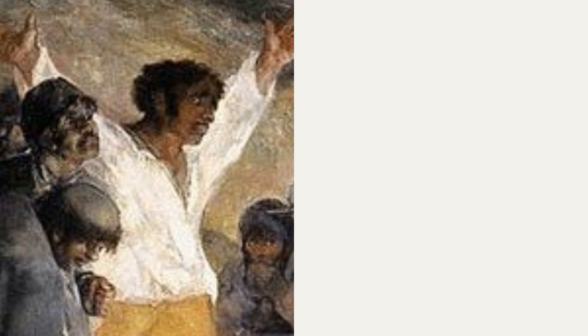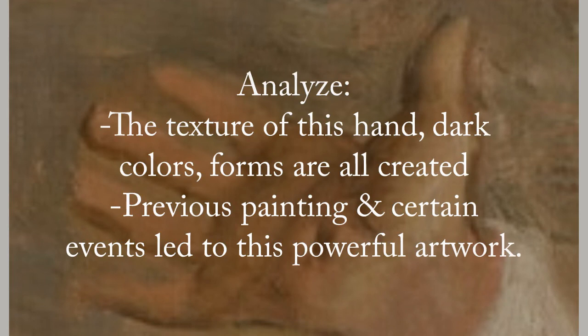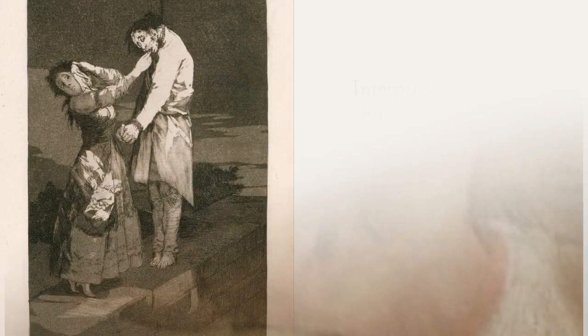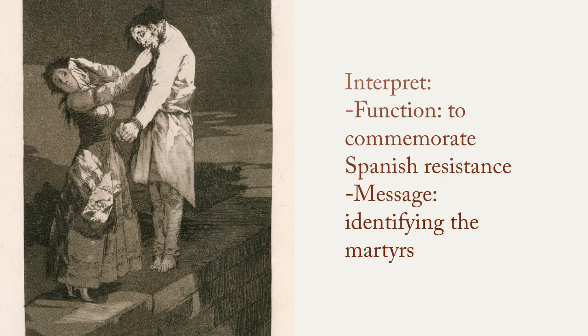De Goya added so much texture, blood, and forms of the body to truly speak out in this painting. He had a similar previous painting that influenced this image. Events in Madrid's forces against the French led to the creation of this artwork. The purpose of this artwork was to commemorate Spanish resistance to Napoleon's armies during the Peninsular War. In one of the surrendering hands, he sends out a message that identifies the martyrs as the attackers during this ambush.